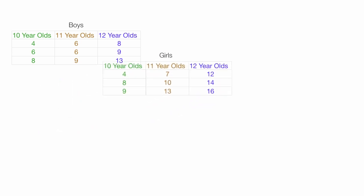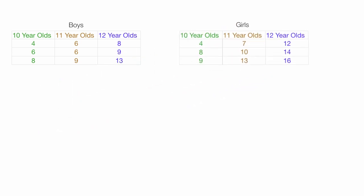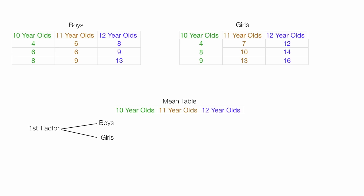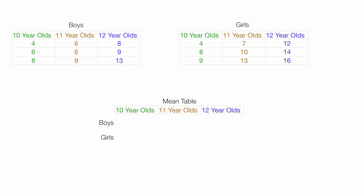Now I'm going to build a third table with three columns of data. I'm going to have two rows of data by age group and two rows of data by gender — boys and girls. Boys and girls is the first factor, which I'm calling gender. The second factor I'm calling age group. So I'm going to have two rows of data with three columns in my table.